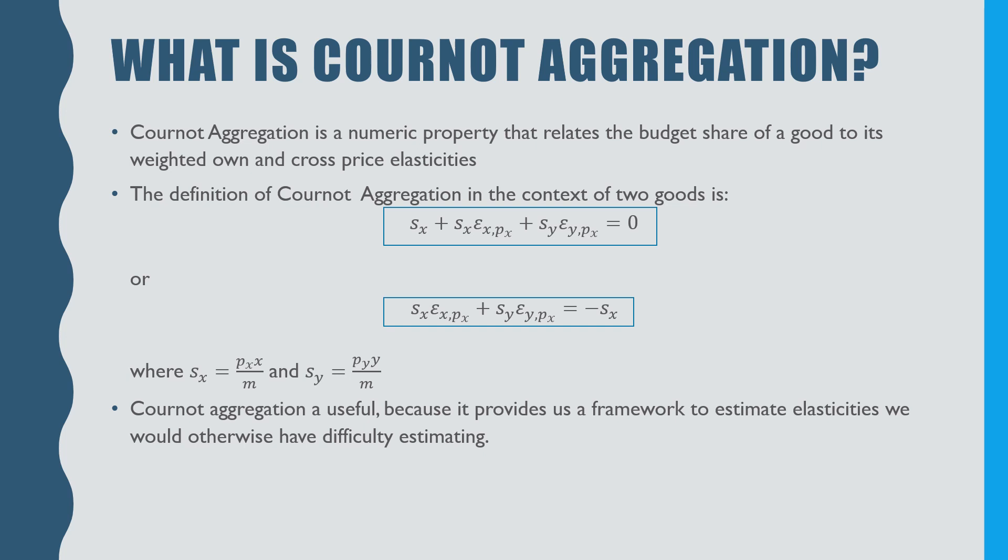Or that the budget share of good X times its own price elasticity plus the budget share of good Y times its cross-price elasticity with good X is equal to the negative budget share of good X.